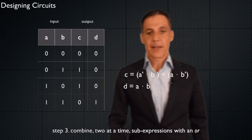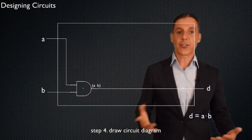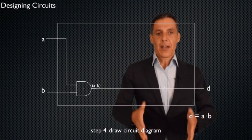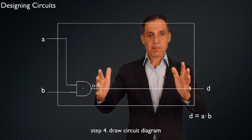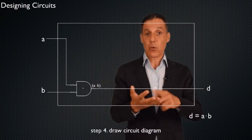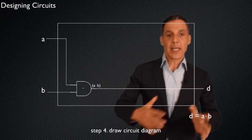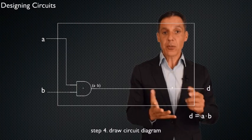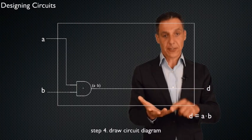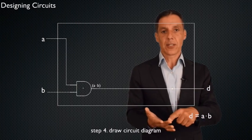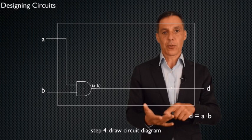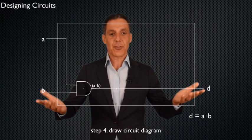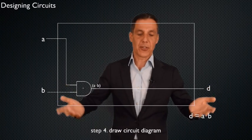Step four: draw a circuit. At this point I have a truth table and boolean expressions using AND, OR, and NOT that tell me how to transform my input to my output. If I can do things with AND, OR, and NOT, I can draw a circuit — because that's exactly what a circuit is. This is the fun part, and it's the easy part — you're done.